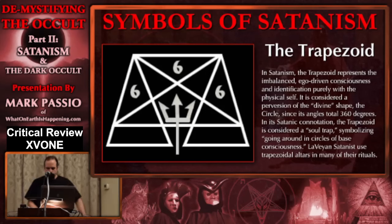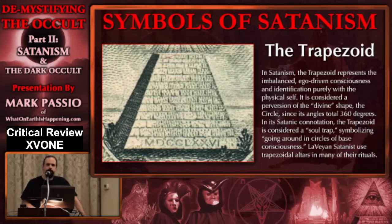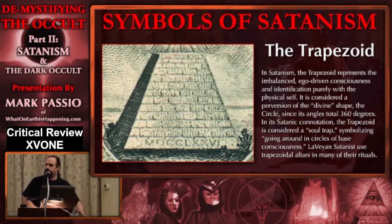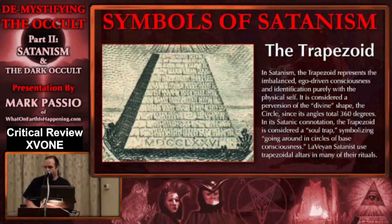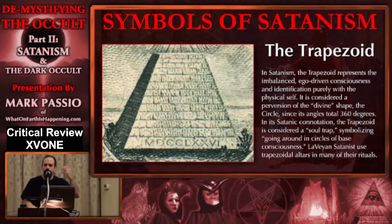LeVayan Satanists use trapezoidal altars in many of their rituals. And where is the trapezoid most predominantly found symbolically? There it is — the trapezoid, the Satanic symbol. That's why it is the Satanic part of the pyramid and all-seeing eye — not the eye part. That eye part represents divine wisdom that they are trying to block from the world. They want to be God, and they don't want the light of the Creator coming down to the people. They want them in this prison, this trapezoid — the soul trap. That block-headed consciousness, rigid and unyielding — that's what the trapezoid represents.